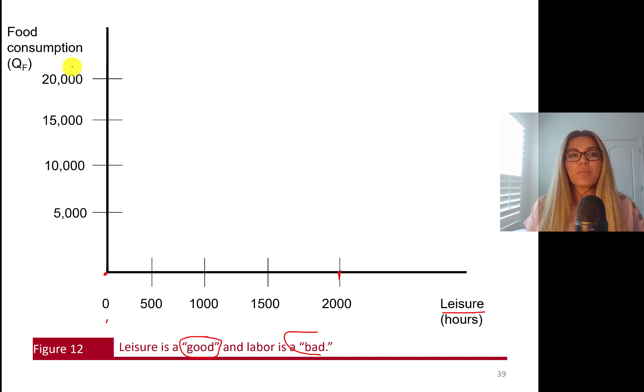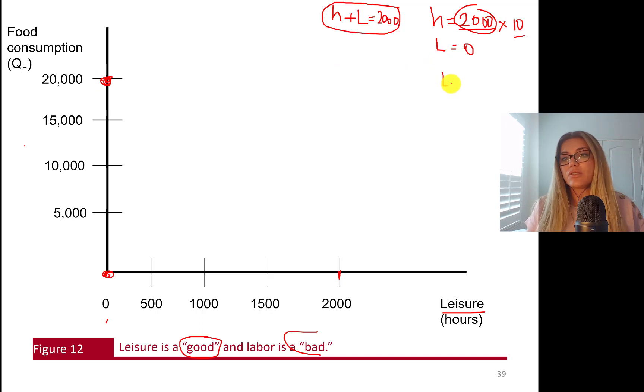Let's construct her budget constraint. So hours of work, I'm going to call this 2,000. And leisure, I'm going to say that hours of work plus leisure needs to be equal to 2,000. You have 2,000 hours available for leisure or work. If you work 2,000 hours, your leisure is zero. And then each hour brought you $10. So you can actually consume, boom, you can actually consume $20,000 worth of food.